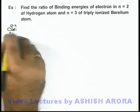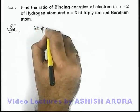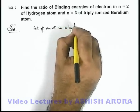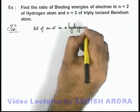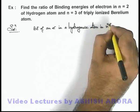Now in solution, we can directly write that binding energy of an electron in a hydrogenic atom in nth orbit